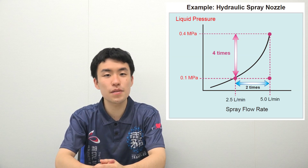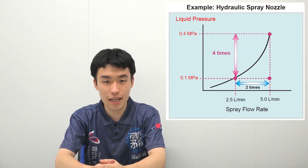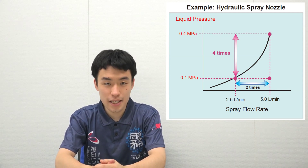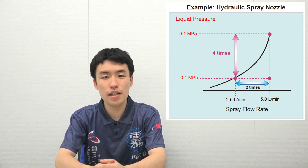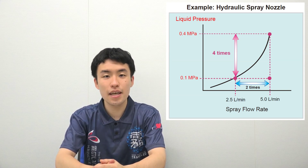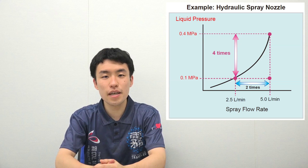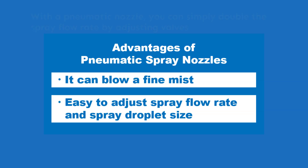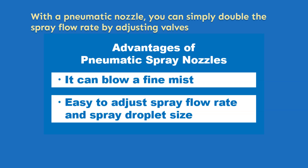Additionally, it is not possible to adjust the spray droplet size with the same hydraulic nozzle. On the other hand, with a pneumatic nozzle you can double the spray flow rate by simply adjusting the liquid and air valves. To adjust the spray with a pneumatic spray nozzle, you need to know how much liquid and air are being sprayed at what pressure.